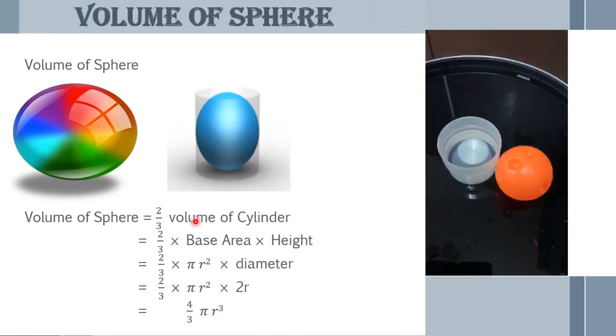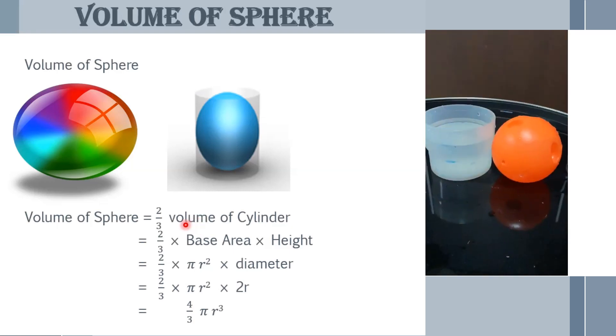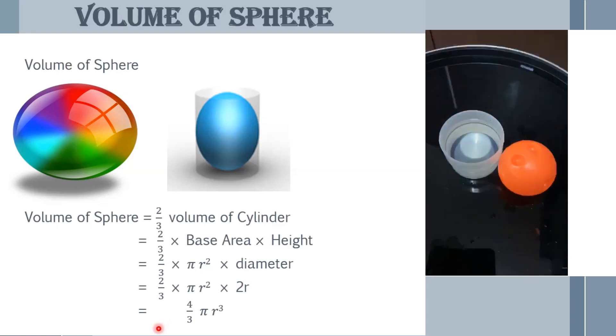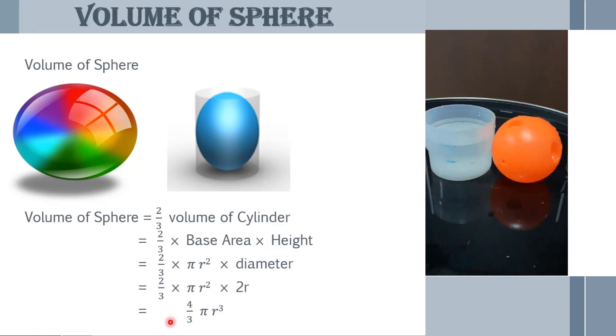If the sphere and the cylinder of same radius is taken, then the volume of sphere is 2 by 3 volume of cylinder, which is the base area and the height, and here the height is the diameter 2r. So, volume of sphere is 4 by 3 pi r cube.